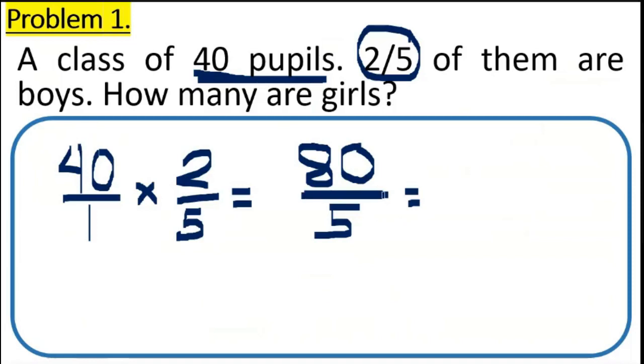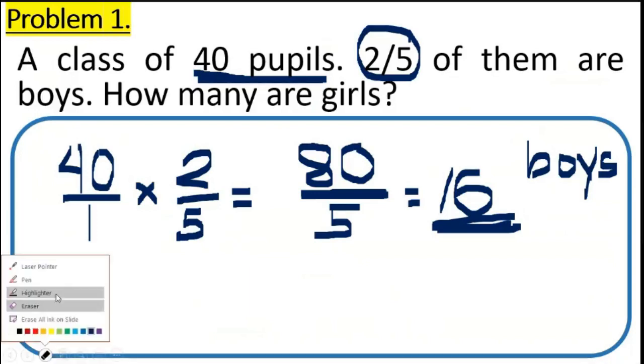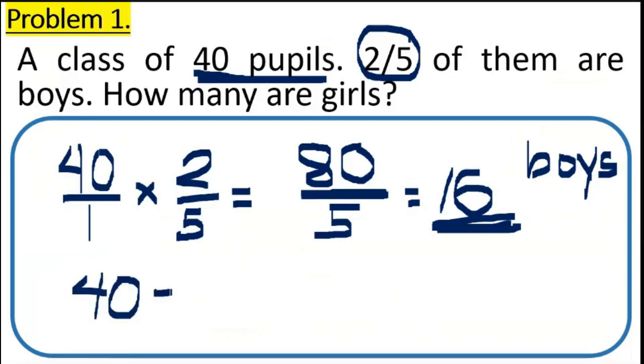The bar sign indicates operation to be applied is division. So, 80 divided by 5. So we have 16. This 16, number 16, this is the number of boys. But the question is, ilan ba yung girls? Right after that, we apply multiplication, we need to subtract 40 minus 16. So, 40 minus 16 is 24. And that is our answer. We have 24 girls in our class.